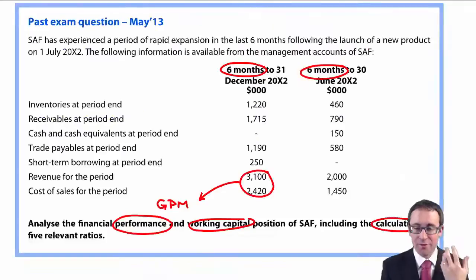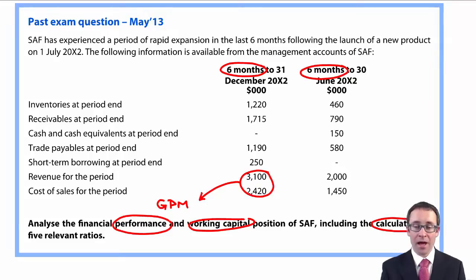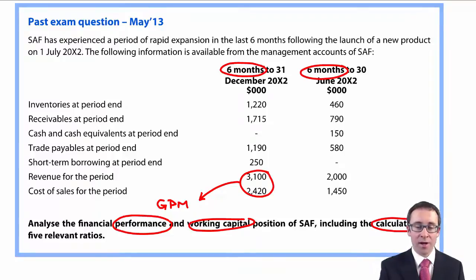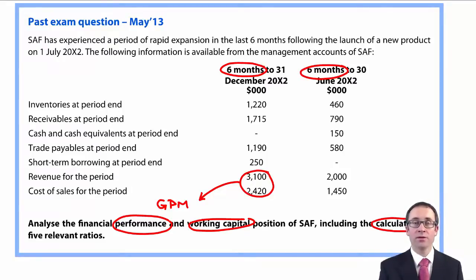That would have thrown everybody and meant they lost the mark for inventory days, receivable days, and payable days. For the receivables, you take the figure of 1715, divide by the revenue of 3100, and multiply it by 182.5. Likewise for your payables — it's 1190 divided by your cost of sales, multiplied by 182.5. We'd like to divide by credit purchases, but cost of sales will do here.